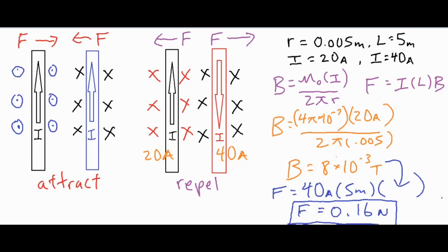Because every force has an equal and opposite force, both wires are being pulled inwards towards each other at 0.16 newtons — 0.16 N to the left for one and 0.16 N to the right for the other. It doesn't matter which wire you start with; if you start with the 40-amp wire you'll still get 0.16 newtons. I hope this was helpful in understanding the direction of forces in parallel current-carrying wires and how to calculate the exact force. Thank you for watching.